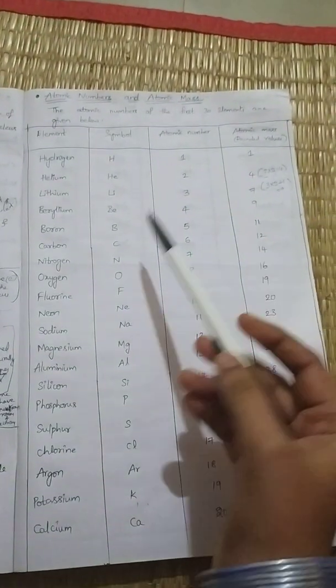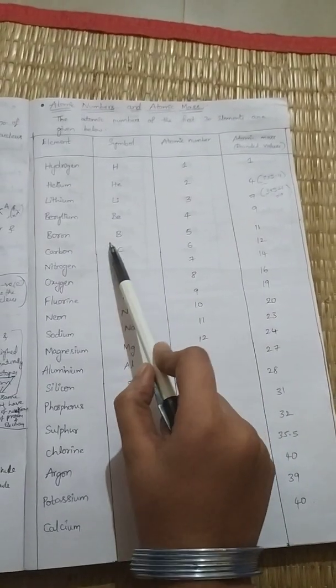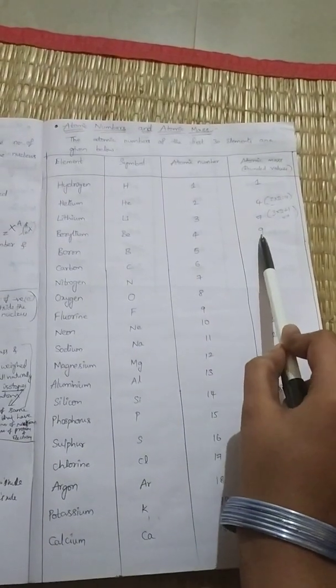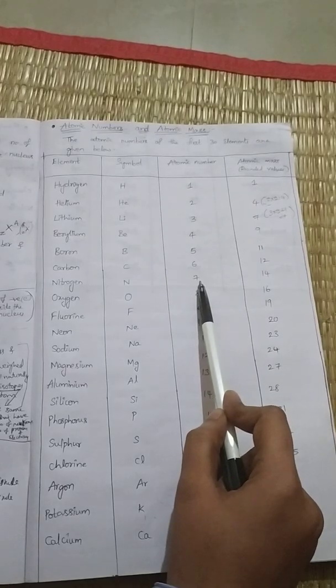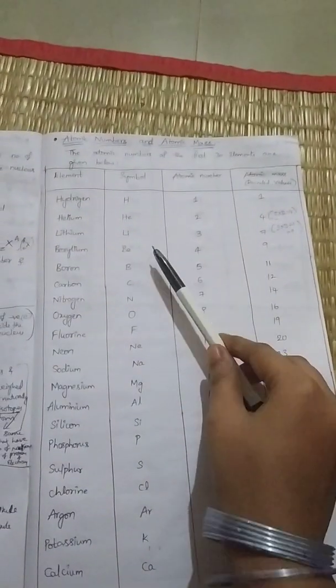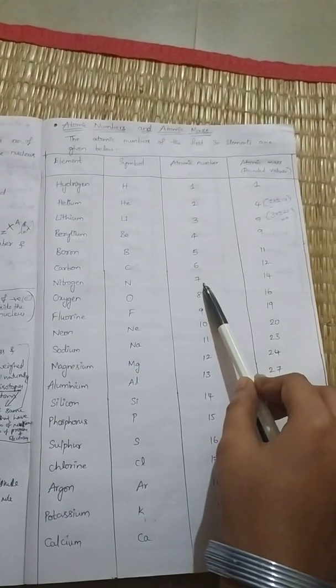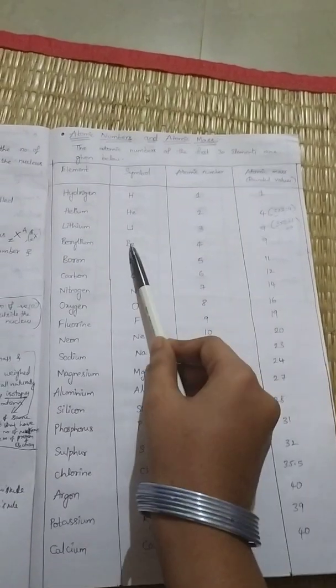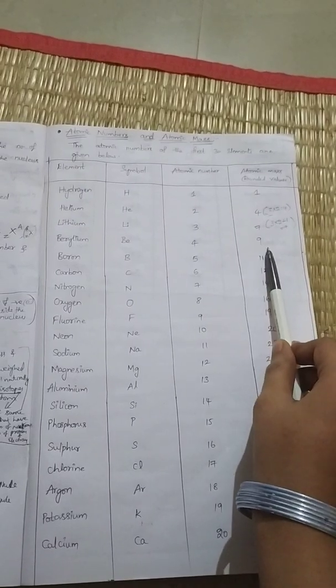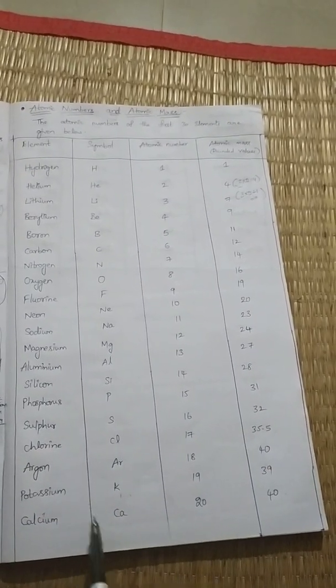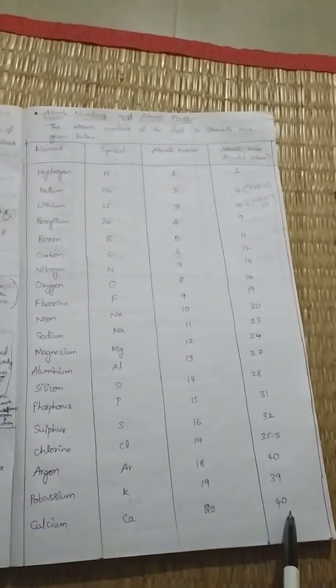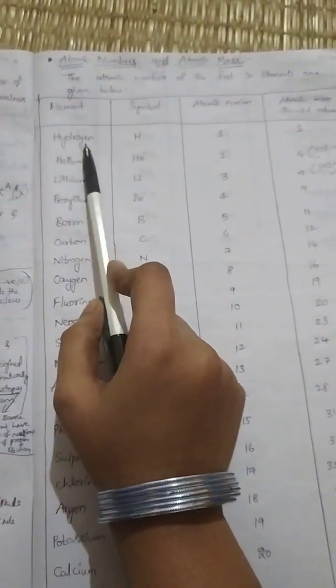For hydrogen, it is always an exception — atomic number and atomic mass are both 1. For beryllium, atomic number is 4 (even) but atomic mass follows the odd rule. Nitrogen has an odd atomic number but follows the even rule — they exchange their rules. Chlorine is always 35.5, and argon and calcium both have atomic mass 40.